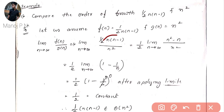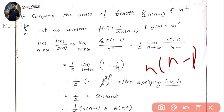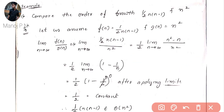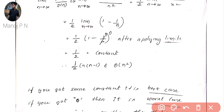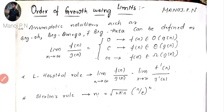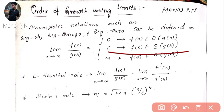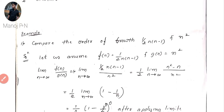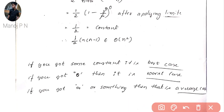We multiplied n into (n−1), giving n²−n divided by n². After simplification, we apply the limit n tends to infinity. When we replace n with infinity, the term 1/n becomes 0, so we are left with a constant. When we get a constant, f(n) belongs to Theta(g(n)).